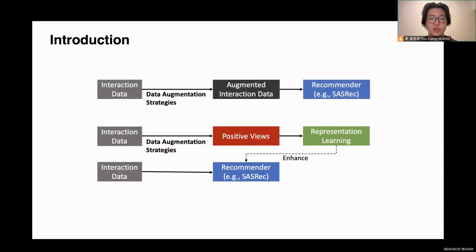Data augmentation strategies have been widely adopted by contrastive learning to produce a positive view for representation learning, which can enhance the performance of the recommender. At the same time, data augmentation strategies can be solely applied to augment the interaction data to train the recommender. Despite the growing popularity of contrastive learning, data augmentation as a basic component has not received sufficient attention.